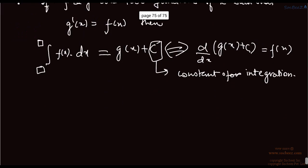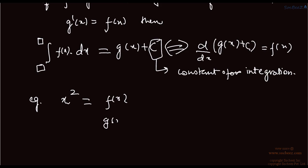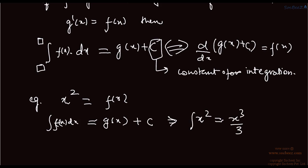Let's take one example. Let f(x) equal x squared. We know that g(x) equals the integral of f(x) dx plus c. This implies the integral of x squared equals x cubed by 3, so g(x) will be x cubed by 3, and c will be some constant.